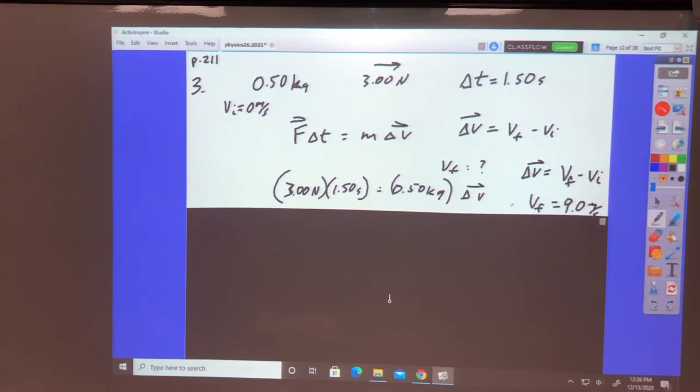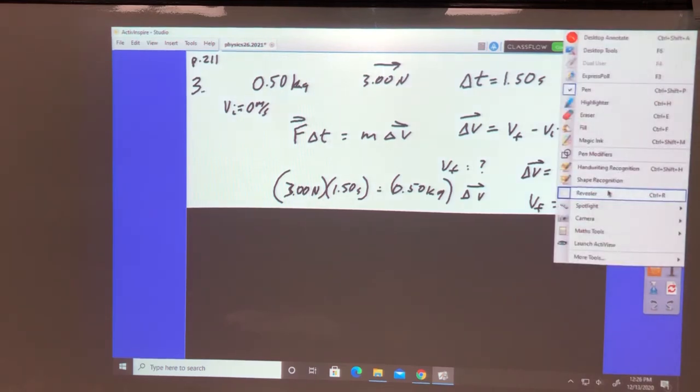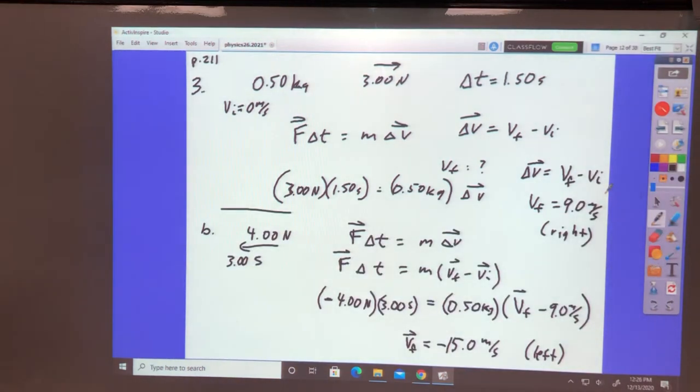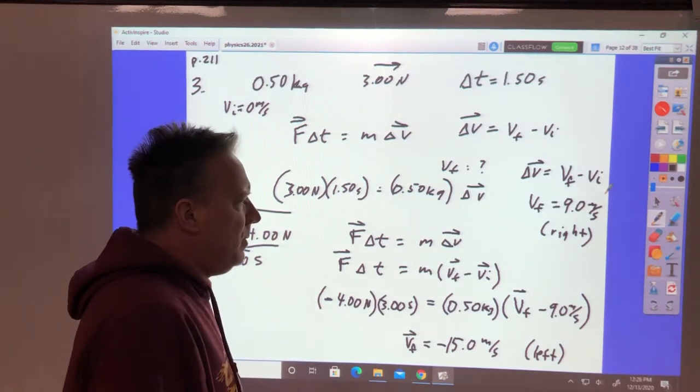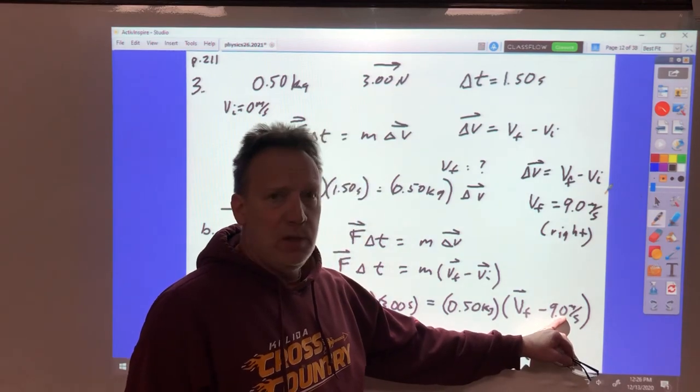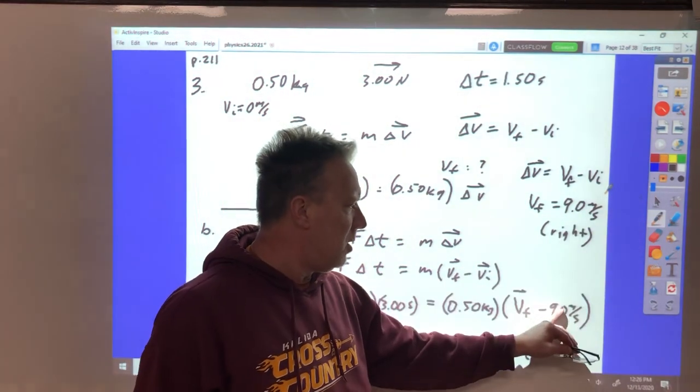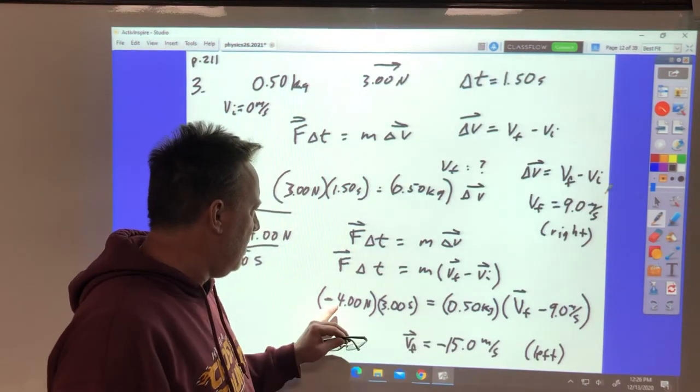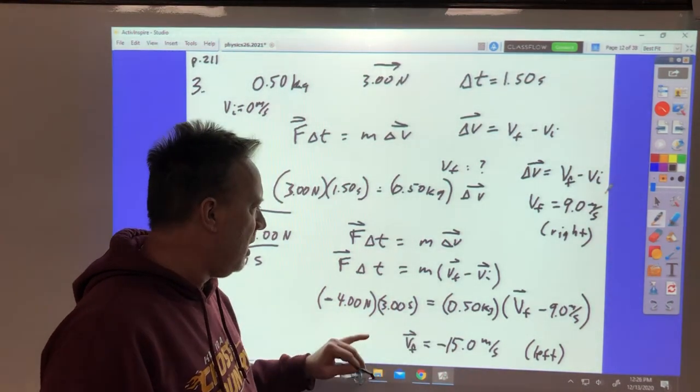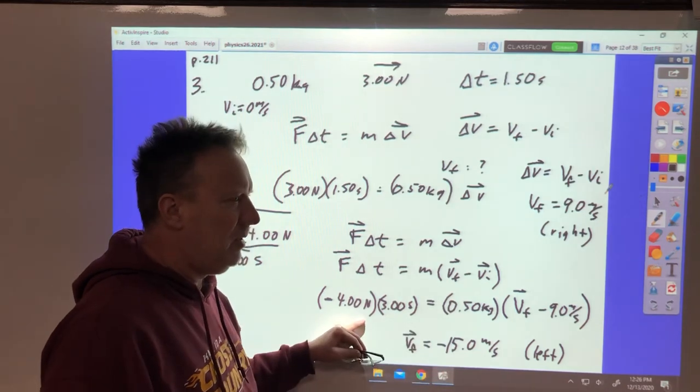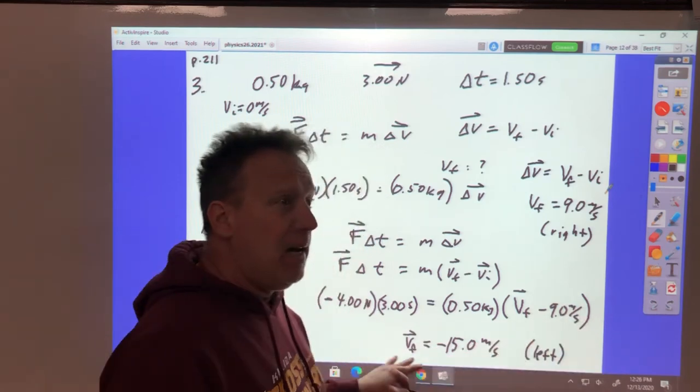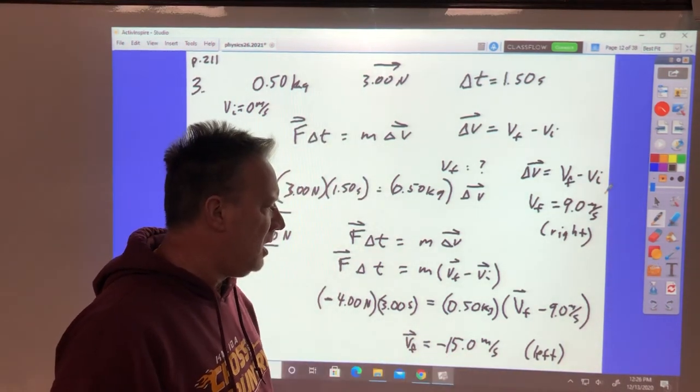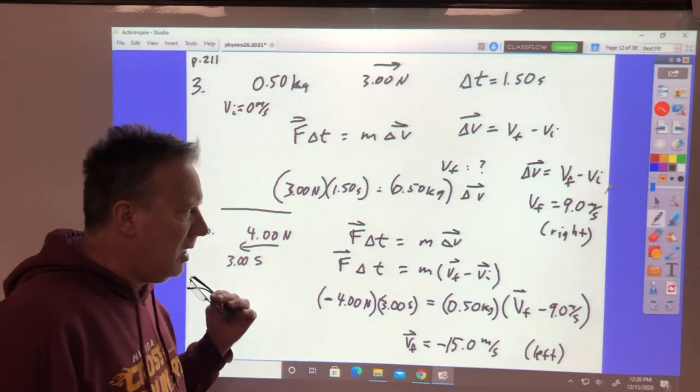At the end of that interval, a force of 4 newtons to the left is applied for 3 seconds. What is the velocity at the end of 3 seconds? Now your initial velocity was 9 meters per second to the right, so we're going to call it positive. You got a half kilogram, negative 4 newton force for 3 seconds. This multiplied is 12, divided by 0.5 is 24, negative. Add 9 to negative 24, and you end up with negative 15 meters per second to the left is what it's going.